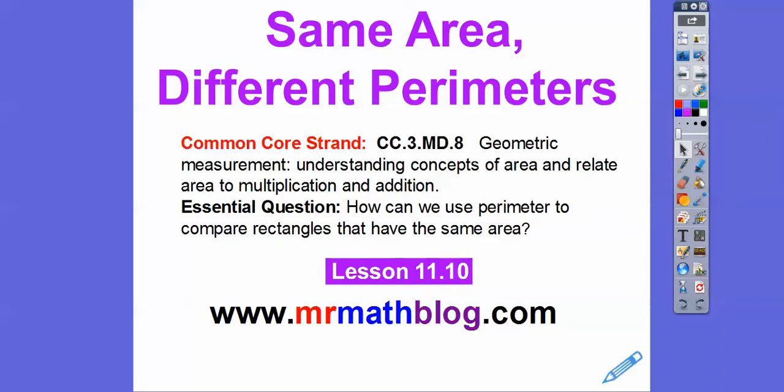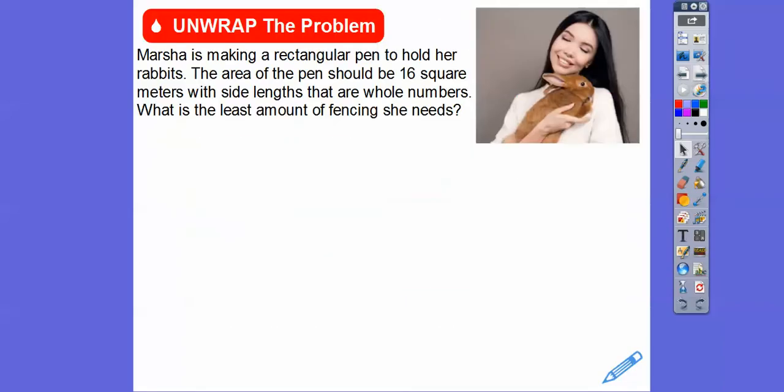Here's our common core strand — the same one as last time, and the question is almost the same, just kind of flip-flopped from yesterday's lesson. How can we use perimeter to compare rectangles that have the same areas? So we're going to have rectangles that have the same areas. Here's Marcia — Marcia is making a rectangular pen to hold her rabbits. The area of the pen should be 16 square meters with side lengths that are whole numbers — so no decimals or fractions. What's the least amount of fencing that she's going to use?